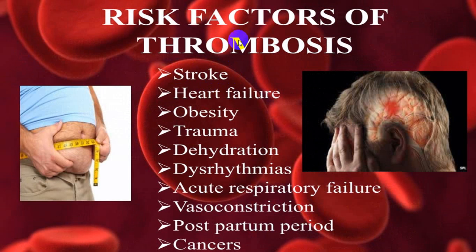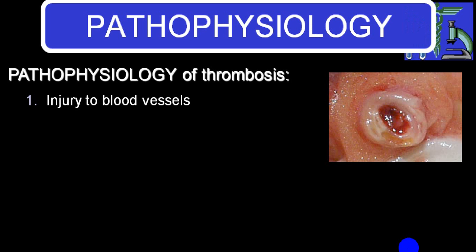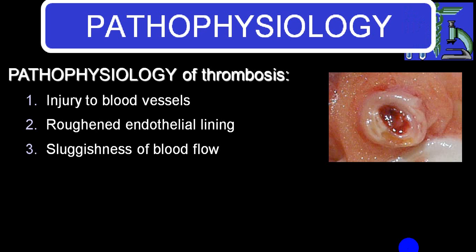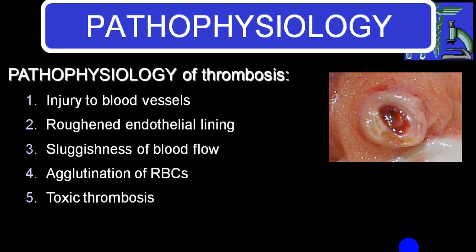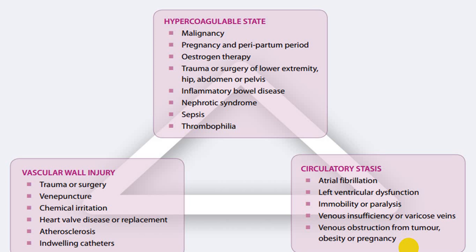Additional risk factors for thrombus formation include stroke causing immobility, heart failure causing stasis, obesity, trauma, dehydration increasing packed cell volume, arrhythmia particularly atrial flutter/fibrillation, acute respiratory failure, severe vasoconstriction, postpartum period, and malignancy. Once thrombus formation occurs secondary to vessel injury, endothelial damage, blood stasis, RBC agglutination, toxic thrombosis, or abnormal platelets, any of these conditions can trigger the process.